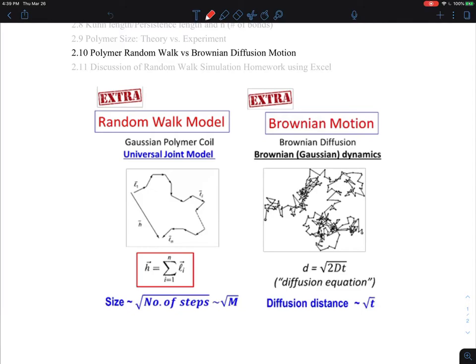But I wanted to give something that shows an awful similarity that we talk about: random walk of a polymer chain, which is shown here on the left, and what is called the Brownian motion.